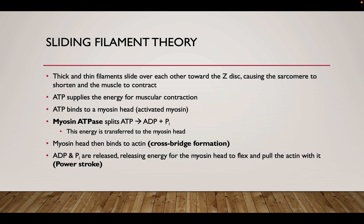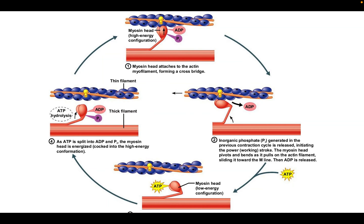Once the cross-bridge forms, the ADP and inorganic phosphate are still attached to the myosin head. When they are released, this also releases some energy — enough for the myosin head to pivot. Because it's attached to the actin, it's going to pull the actin and flex it along the myosin, pulling the actin over the top of itself. This moves the two Z-discs or Z-lines closer to each other, causing shortening of the sarcomere — what we know as muscle contraction. This whole process of the myosin head pivoting when ADP and inorganic phosphate are released is called the power stroke, sometimes also called the working stroke.